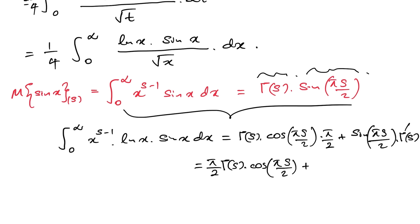This gives us pi over 2 times gamma of s times cosine of pi·s over 2, plus sine of pi·s over 2 times gamma prime of s. We use the identity that the derivative of the gamma function is gamma prime of s equals gamma of s times the digamma function psi of s.